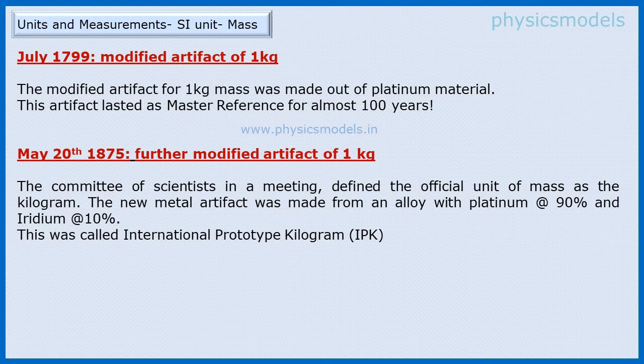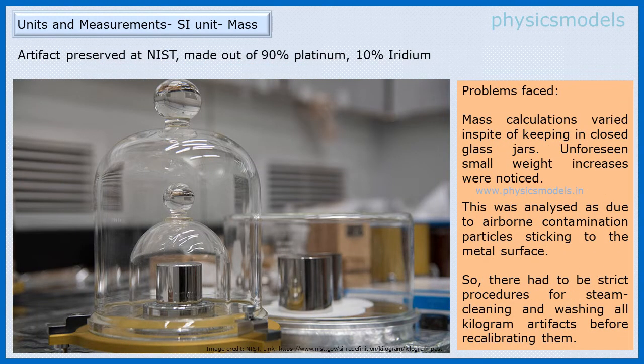A beautiful photograph of the platinum-iridium cylinders kept at the NIST. The mass of these weights, although they were kept inside glass jars and carefully controlled, noticed some changes. These changes were later analyzed as due to some airborne particles sticking to these cylinders. It's very difficult to control that, and scientists put in procedures for steam cleaning and washing them before recalibrating. It was a painful procedure. It was quite clear that physical artifacts are not the way forward.